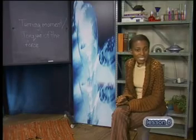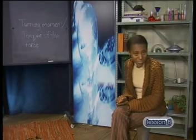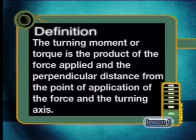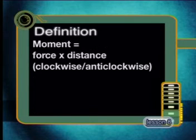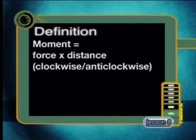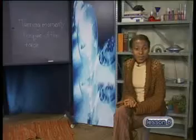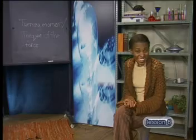Let's make sure that we understand this by defining it mathematically. The turning moment, or torque, is the product of the force applied and the perpendicular distance from the point of application of the force and the turning axis. We state the direction of the moment as being clockwise or anticlockwise. Because this definition is so precise, it may sound a little complicated.